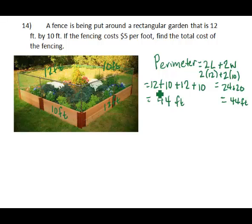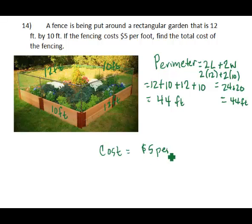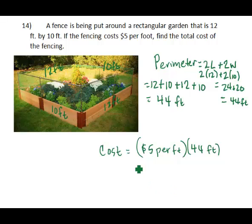To find the total cost, we multiply the cost of $5 per foot times the 44 feet that we need to purchase. So multiplying $5 per foot times 44 feet gives us a total cost of $220.